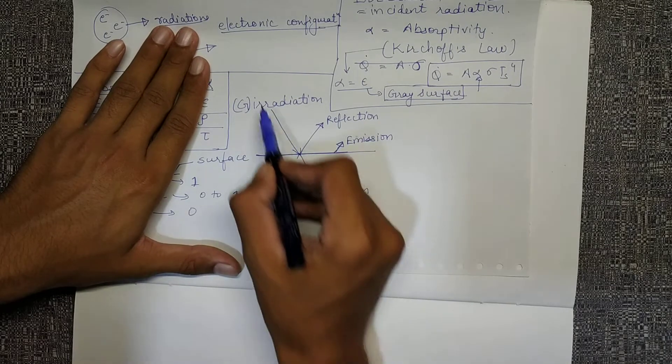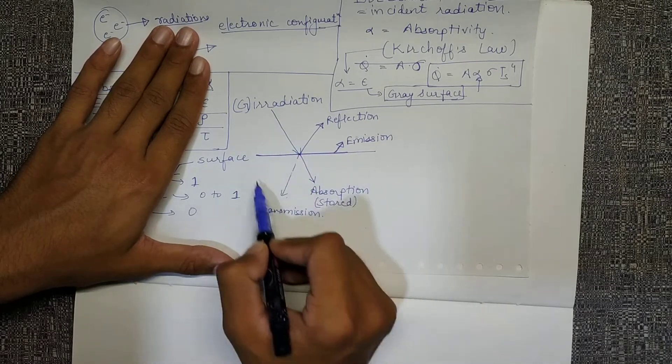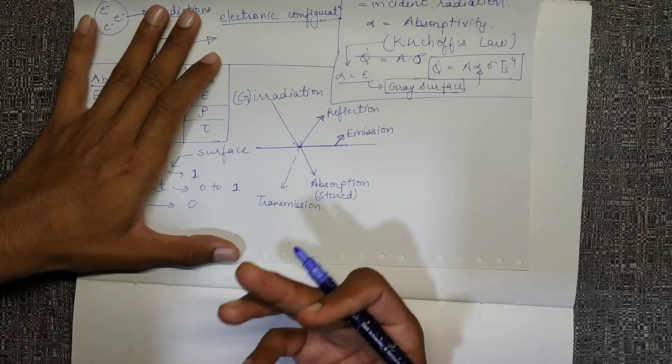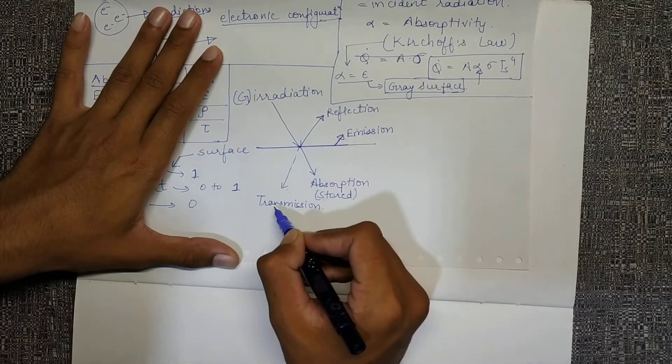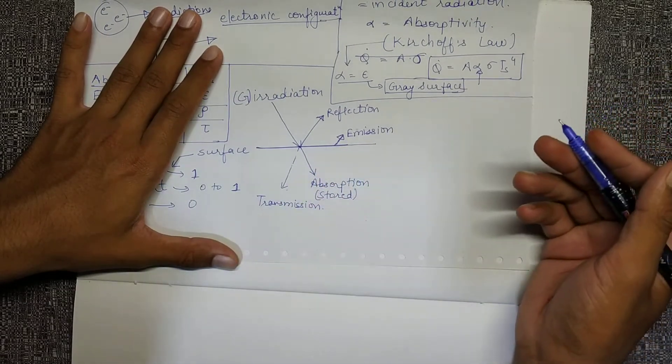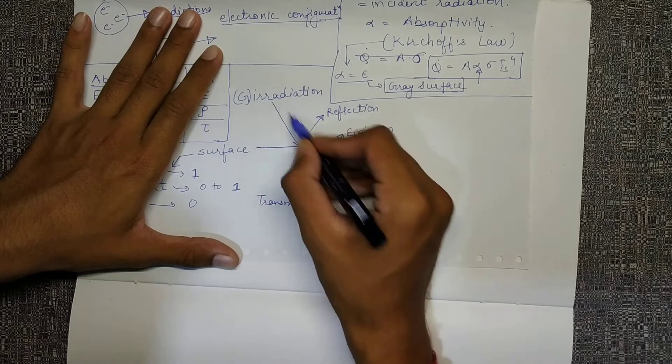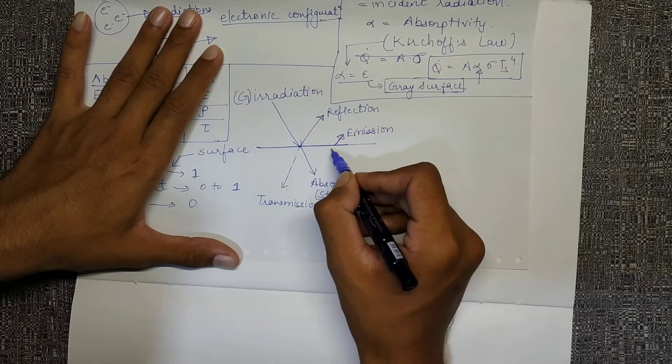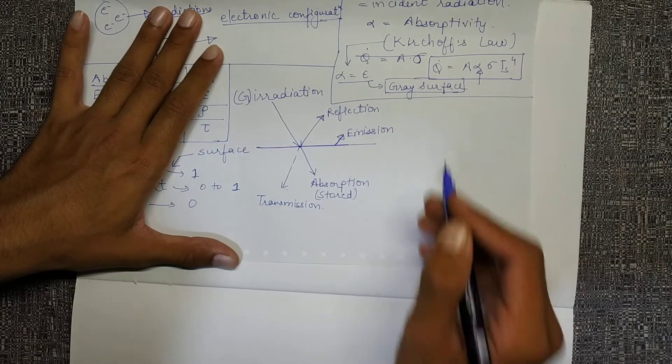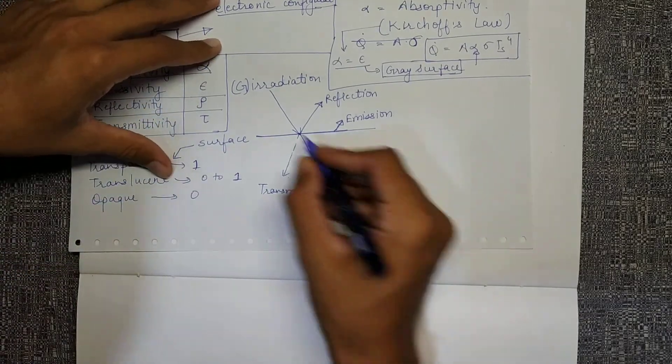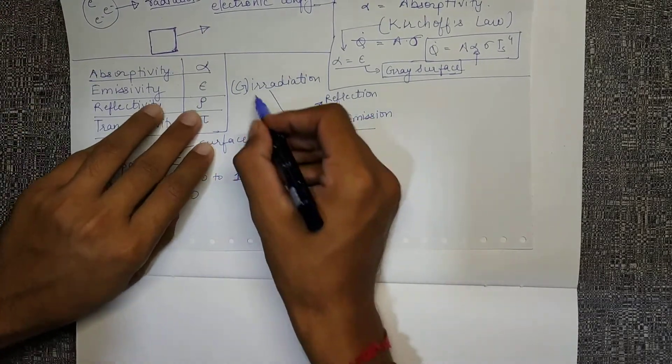The law for emission is that for any body which has a temperature greater than zero, since it has now absorbed some energy, it will emit some energy. So these are the four things. We had some irradiation, the body or the surface absorbed some energy, then it transmitted some energy to some other body, it reflected back some part of the irradiation, and after increasing the temperature, it emitted.